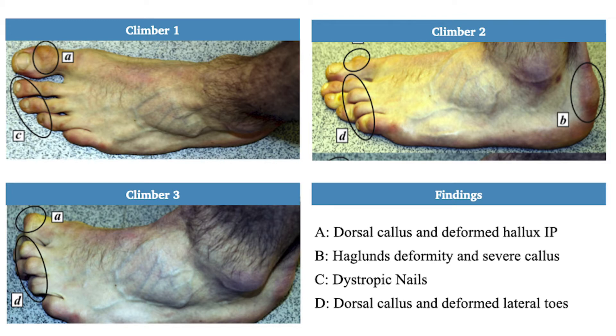In climber two, we see a dorsal callus over the great toe, dorsal calluses over the second to fifth digit and deformed lateral toes, and a Haglund's deformity with severe callusing.